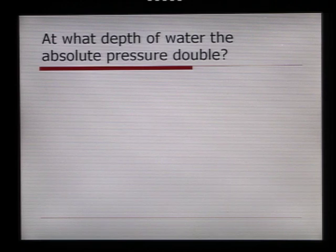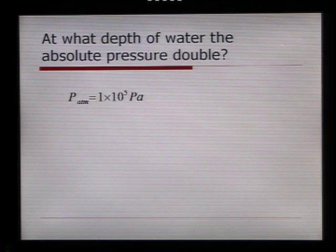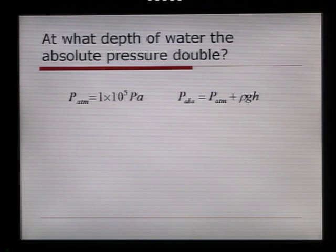At what depth of water is the absolute pressure double? A simple question. We know what the pressure is here in atmosphere, so at what depth would you have to swim for the pressure acting on you to be double what it is right now? So, we can take a look at this. The atmospheric pressure is 1 by 10 to the 5. The absolute pressure at that depth would have to equal the atmospheric pressure plus rho g h, h being the depth we have to find out what that is.